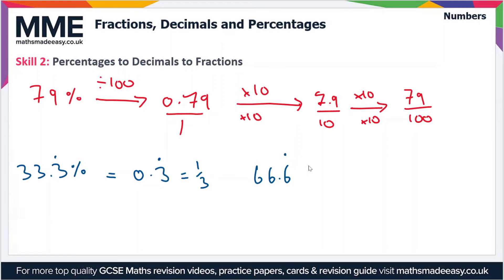Likewise, let's use 66.6 recurring as a percentage, and as a decimal that is equivalent to 0.6 recurring, which as a fraction is two thirds. These are just a couple of examples that you should be aware of. If you want to convert any recurring decimal to a fraction then we do have a separate video which goes through how to do that.